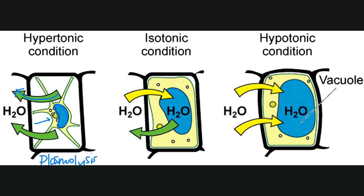In the isotonic situation there's no net movement of water. In a hypotonic situation, this is a normal healthy plant cell — what we call turgid, or having turgor pressure. Water diffuses into the plant cell, fills up the vacuole, and presses out against the cell wall, giving the plant good structure. When you forget to water your plant and it looks wilted, watering it restores that healthy turgor.